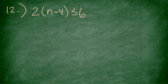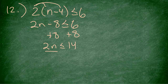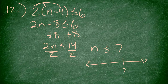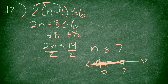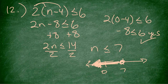Number 12: 2 times the quantity n minus 4 is less than or equal to 6. I distribute: 2n minus 8 is less than or equal to 6. I add 8 to both sides: 2n is less than or equal to 14. Divide by 2: n is less than or equal to 7. Number line: 7 with a closed circle and 0 on the left. Shade to the left. Check 0: 2 times (0 minus 4) is negative 8, which is less than or equal to 6. True.